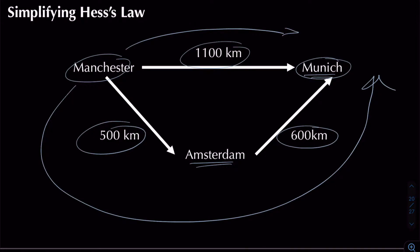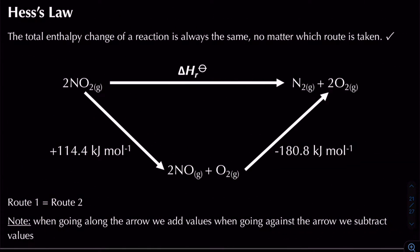The total distance from Manchester to Amsterdam to Munich is 1100 kilometers, equal to route one. This illustrates Hess's law: the total enthalpy change of a reaction is always the same no matter which route is taken — or as it's sometimes stated, independent of the route taken.